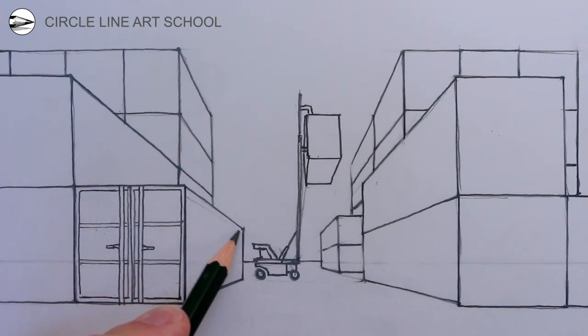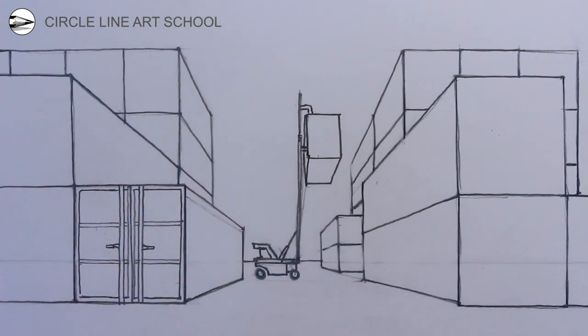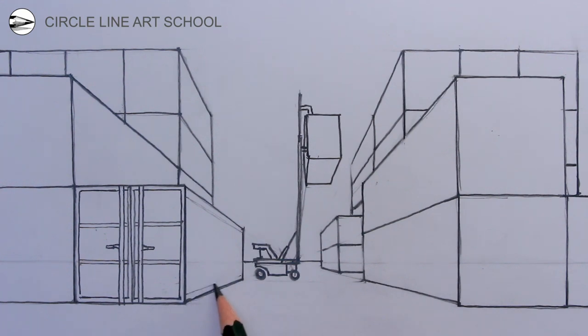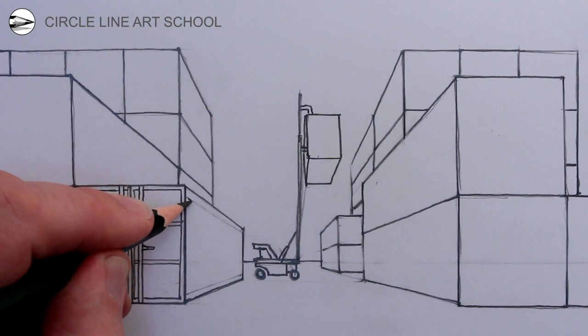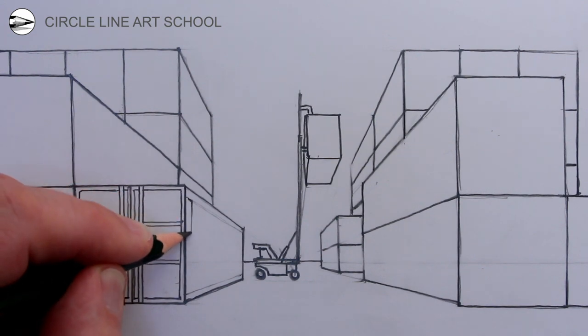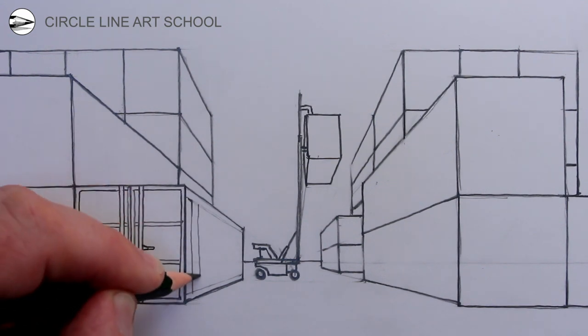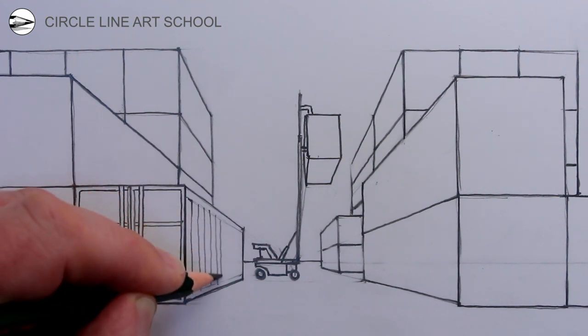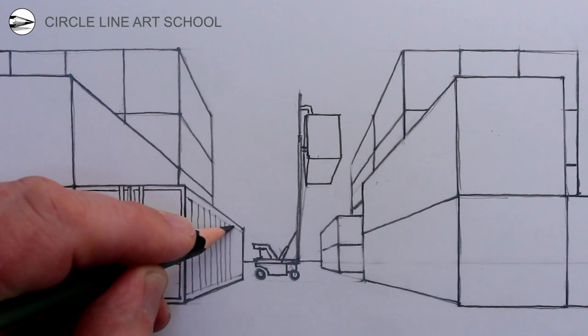Along the sides of each of the shipping containers I'll draw a series of vertical lines, but I'll draw two receding lines, one at the top and one at the bottom first, which go towards our vanishing point in the center of our drawing. And these vertical lines will get closer as they recede from us and go towards the vanishing point.